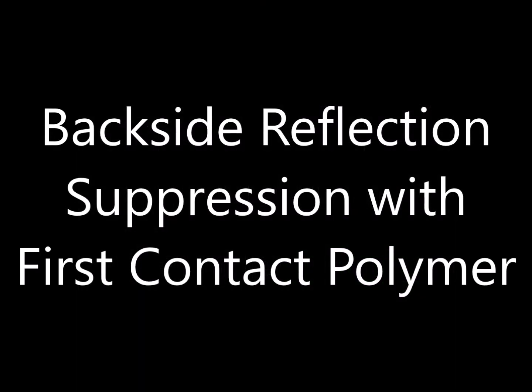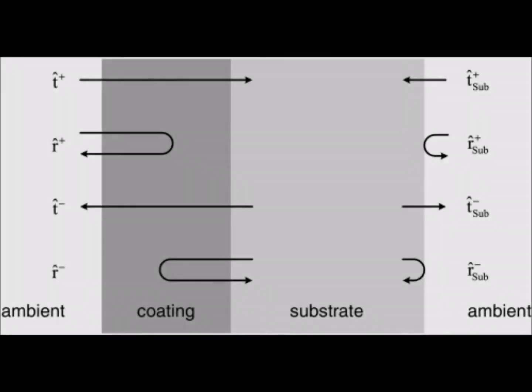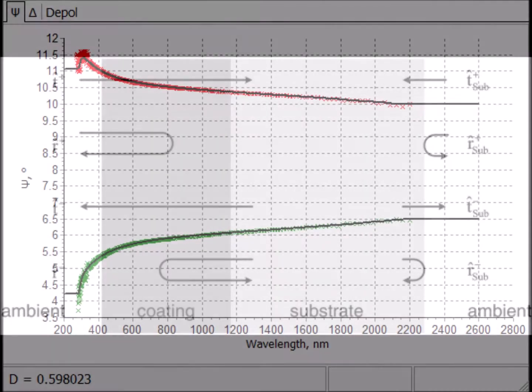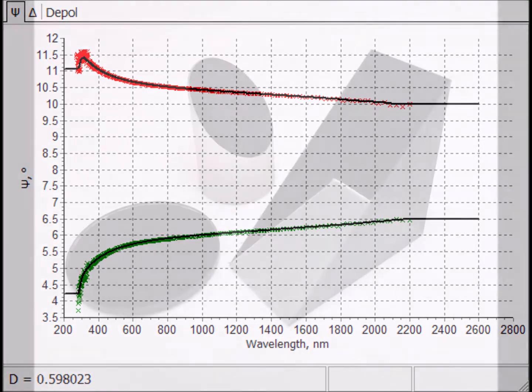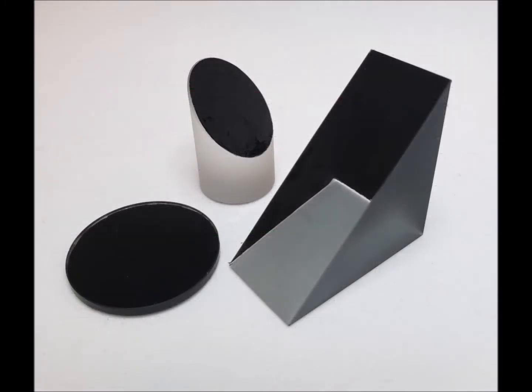Transparent optics introduce challenges in metrology, interferometry, and microscopy. Backside reflections reduce signal to noise, are recorded as artifacts, or introduce false signals. These reflections often need to be suppressed.